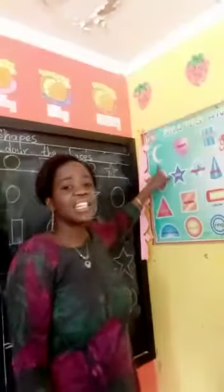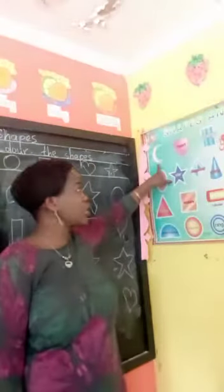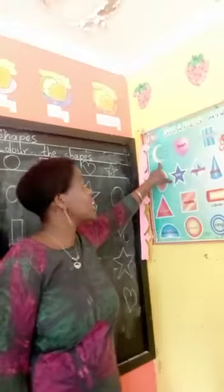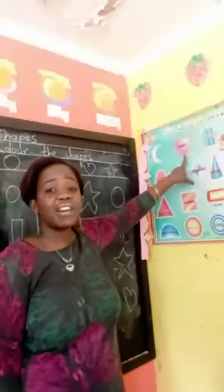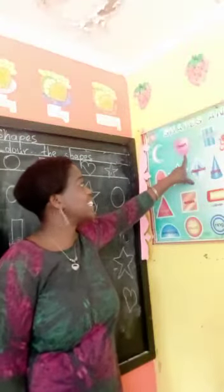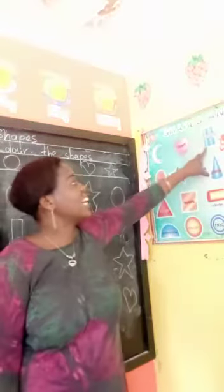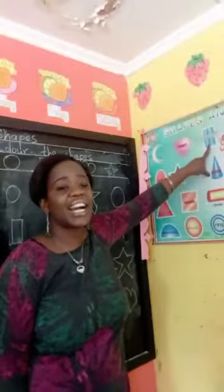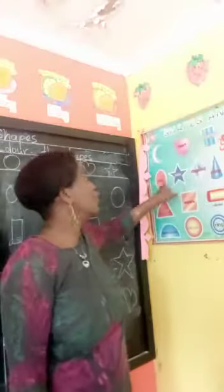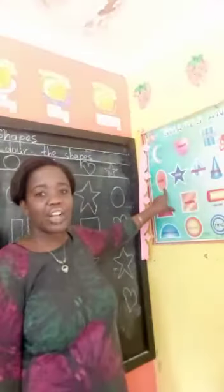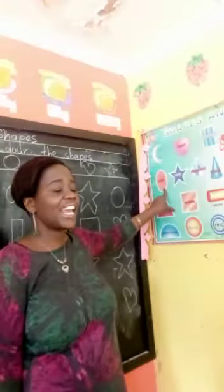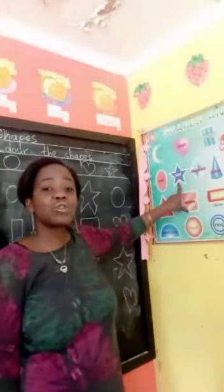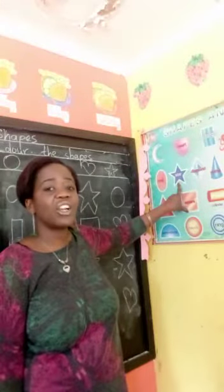The first one we have here is a crescent, and then we have a hat, and then we have a rectangle like dough, here we have oval like an egg, then we have a star — twinkle twinkle little star.